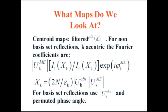That's done with a thing called centroid maps. Essentially, all you need to know is that you're going to filter them. You're going to take every extrapolated reflection and give it a weight. That weight will make a weighted Fourier, and the weights are calculated in a very straightforward way.